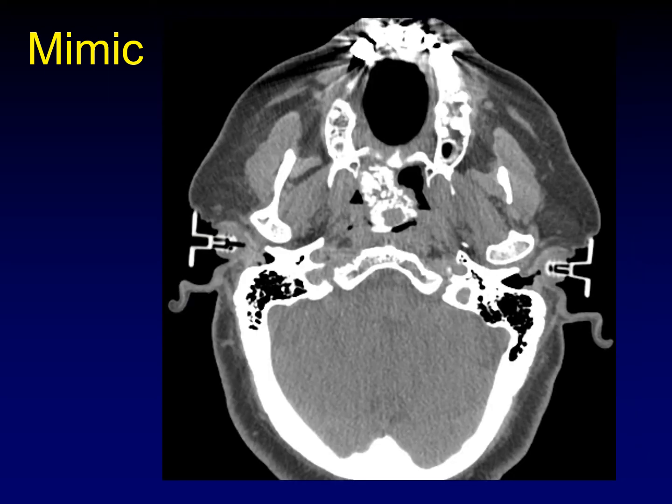Here's another example. Nasopharyngeal carcinomas don't usually calcify, so this is not as good a mimic. But it is a mass filling the nasopharynx with coarse calcifications, an internal matrix, and it's exophytic. This is a sinonasal hamartoma that is extending posteriorly and filling the nasopharynx much the way an antrochoanal polyp would.